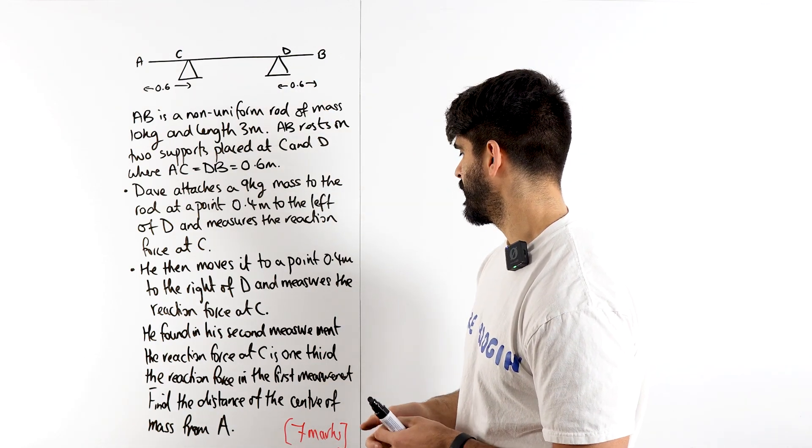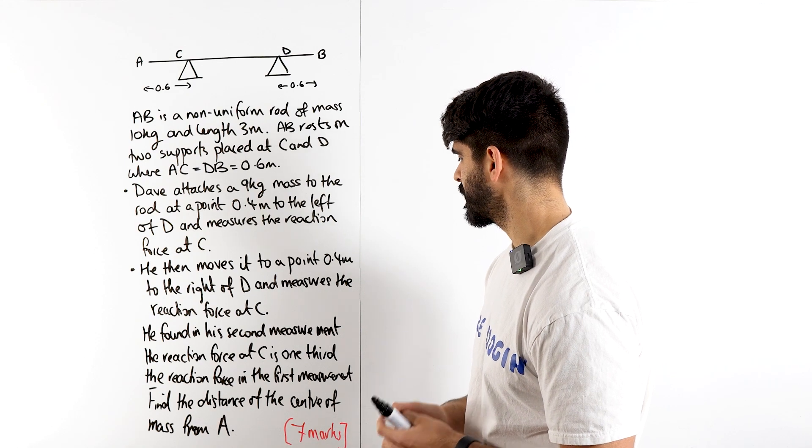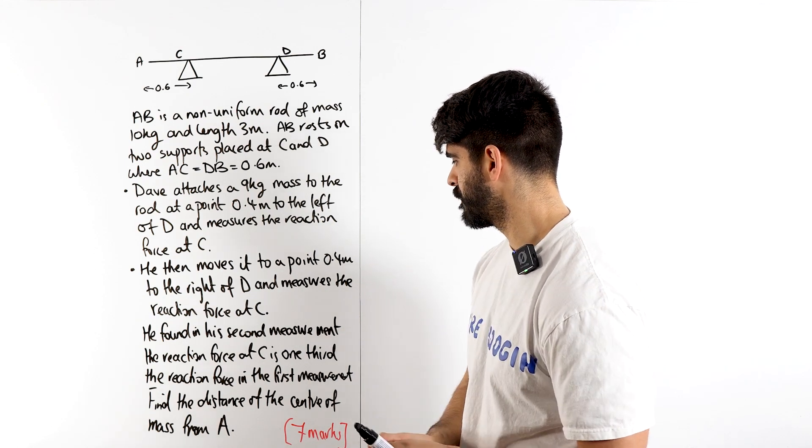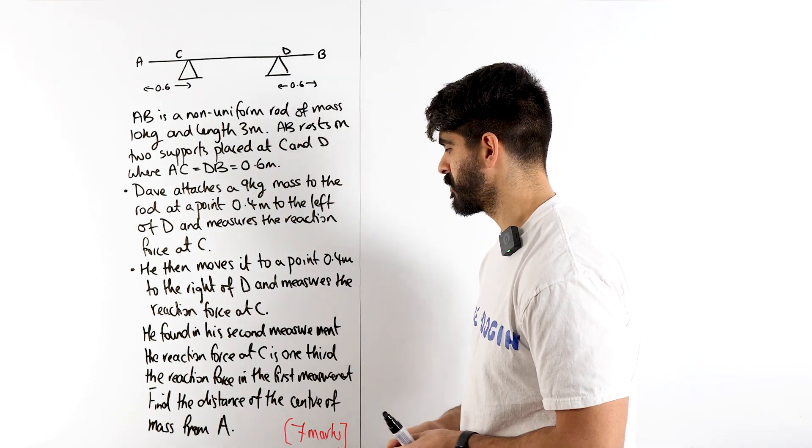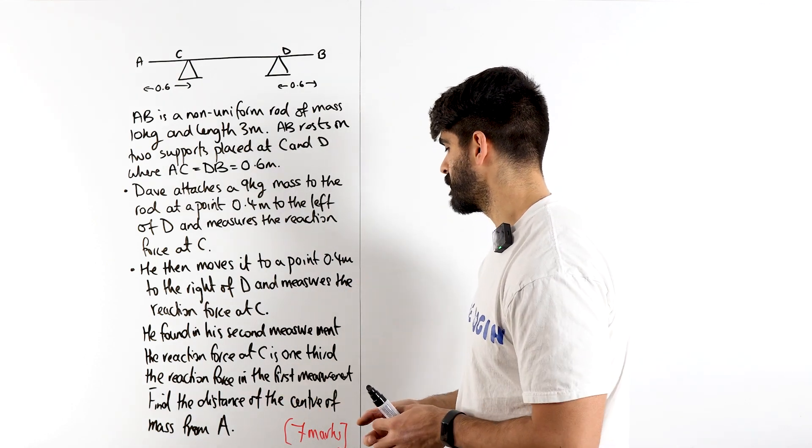He then moves it to 0.4 meters to the right of D and measures the reaction force at C. He found in his second measurement the reaction force at C is one-third the reaction force in the first measurement. Find the distance of the center of mass from A.